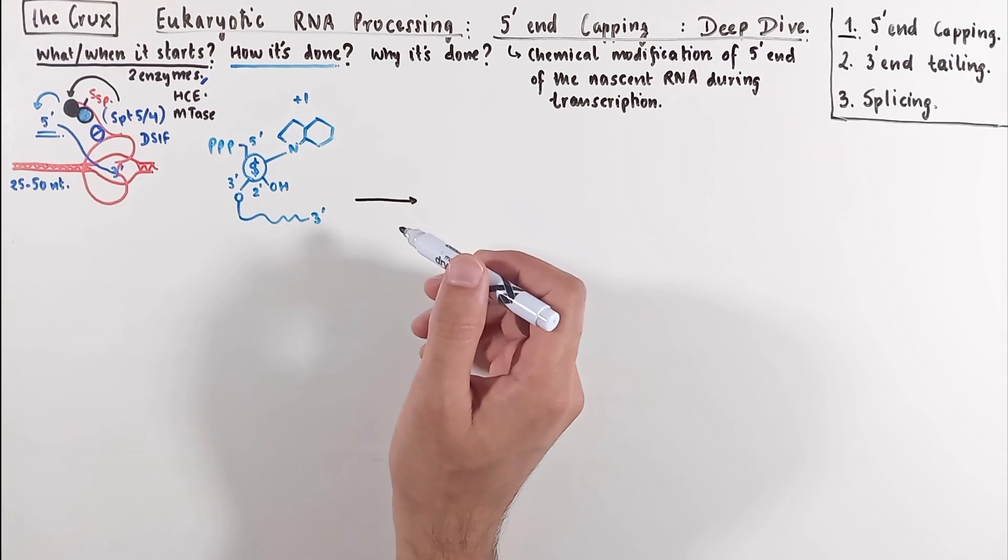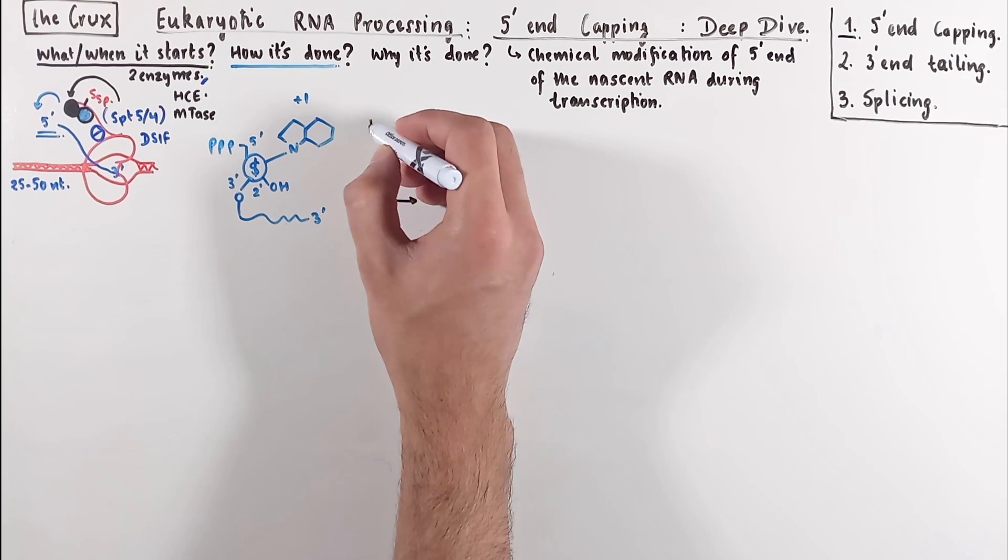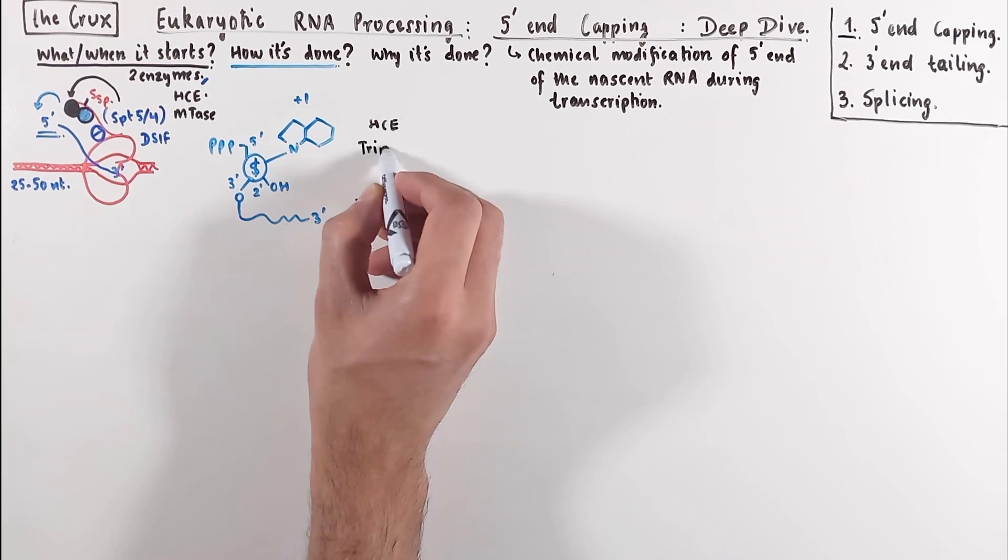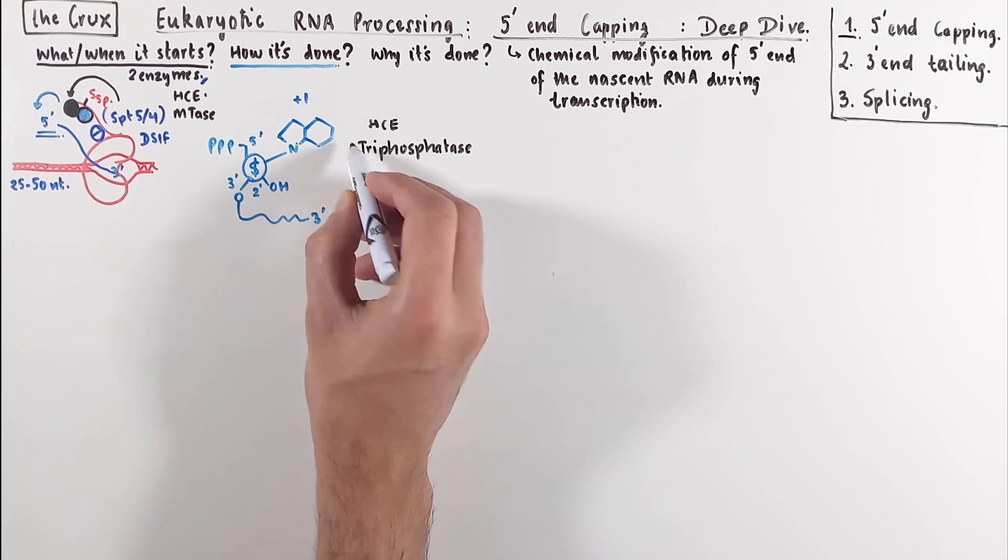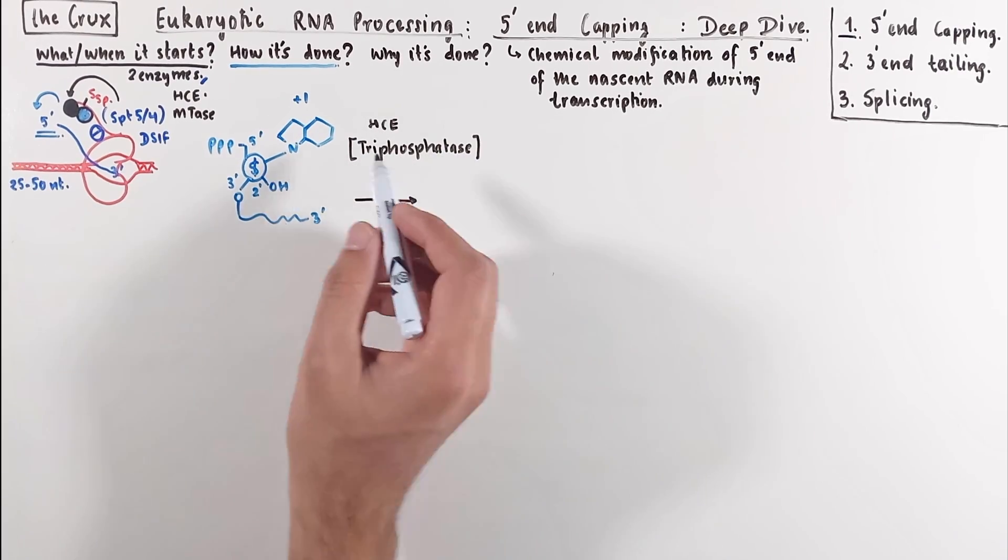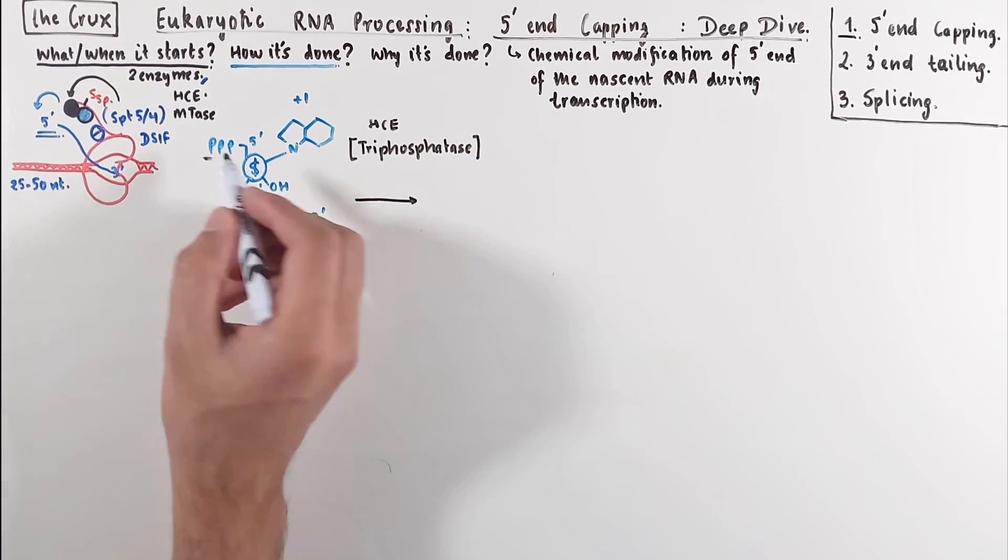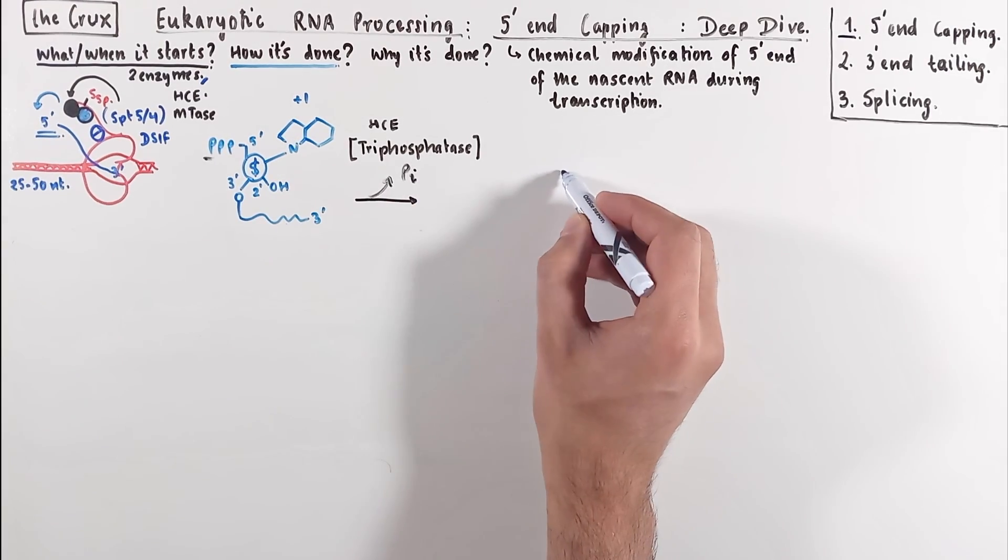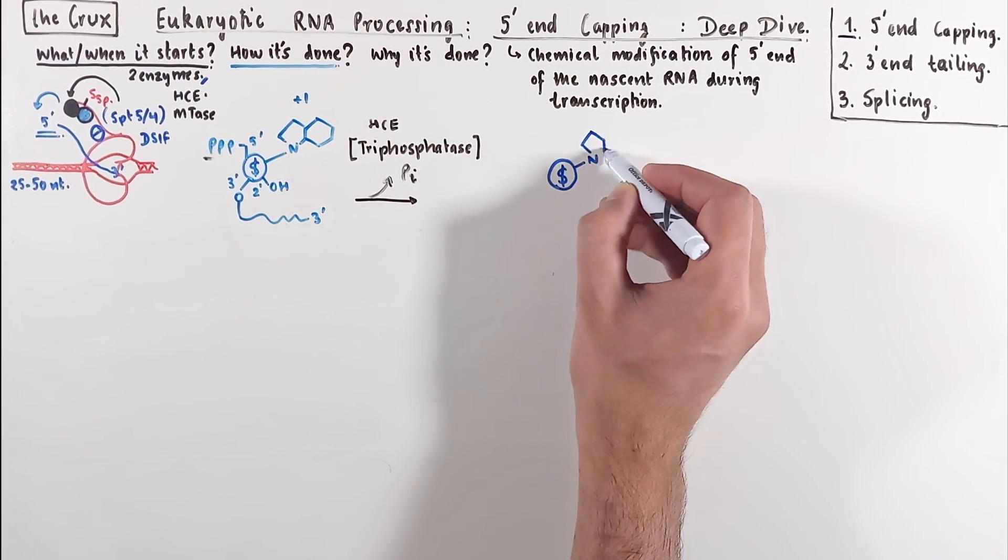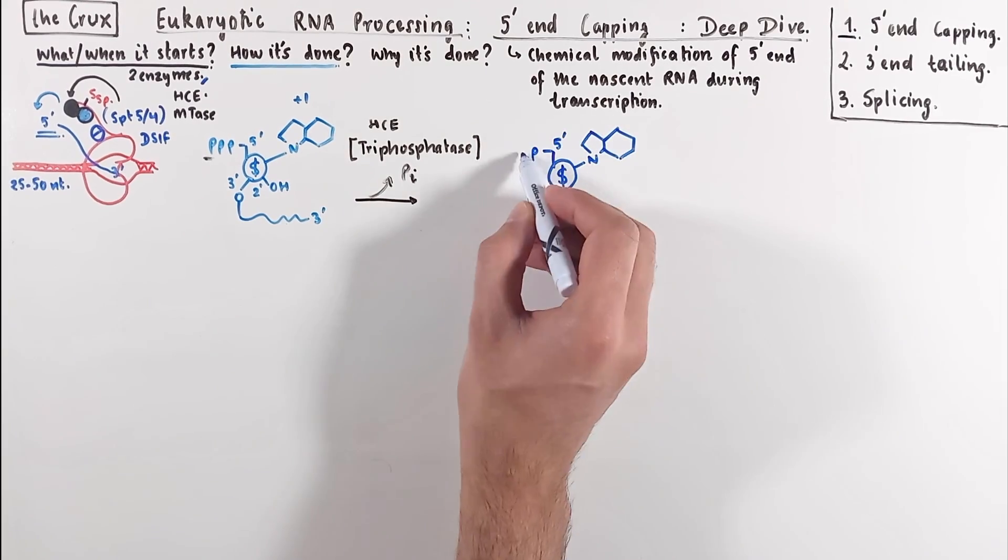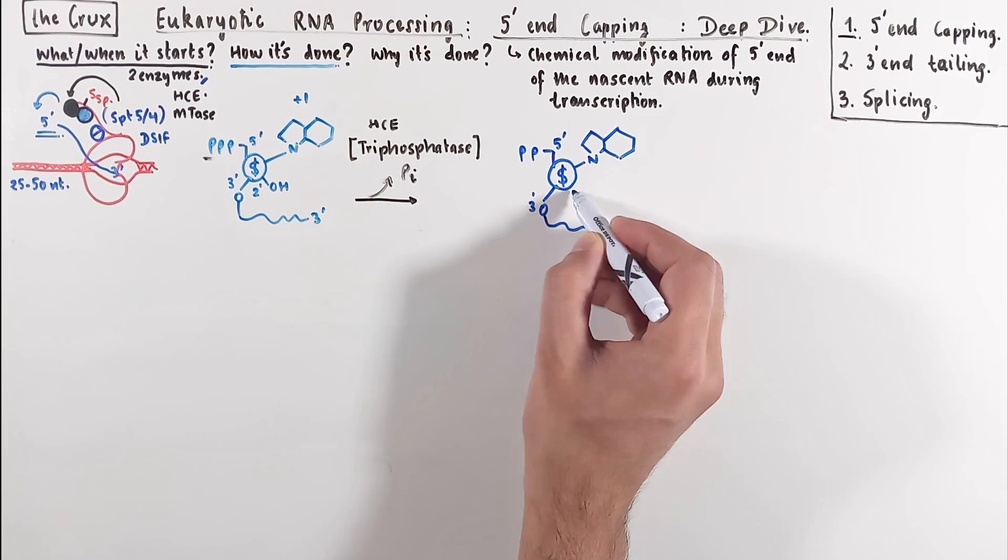The first enzyme in play is the human capping enzyme, and specifically the triphosphatase activity works first, which releases the gamma phosphate from the nucleotide. So now if we draw out the sketch again, following this step, we notice that the plus one site has only two phosphates left.